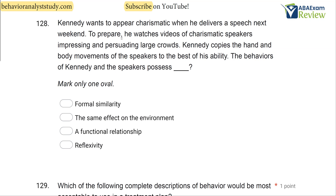Question 128: Kennedy wants to appear charismatic when he delivers a speech next weekend. To prepare, he watches videos of charismatic speakers impressing and persuading large crowds. Kennedy copies the hand and body movements of the speakers to the best of his ability. The behaviors of Kennedy and the speakers possess what? The question is asking about what is alike between Kennedy's behaviors and the speaker's behaviors. Start to think about imitation, modeling, formal similarity, and functional similarity.